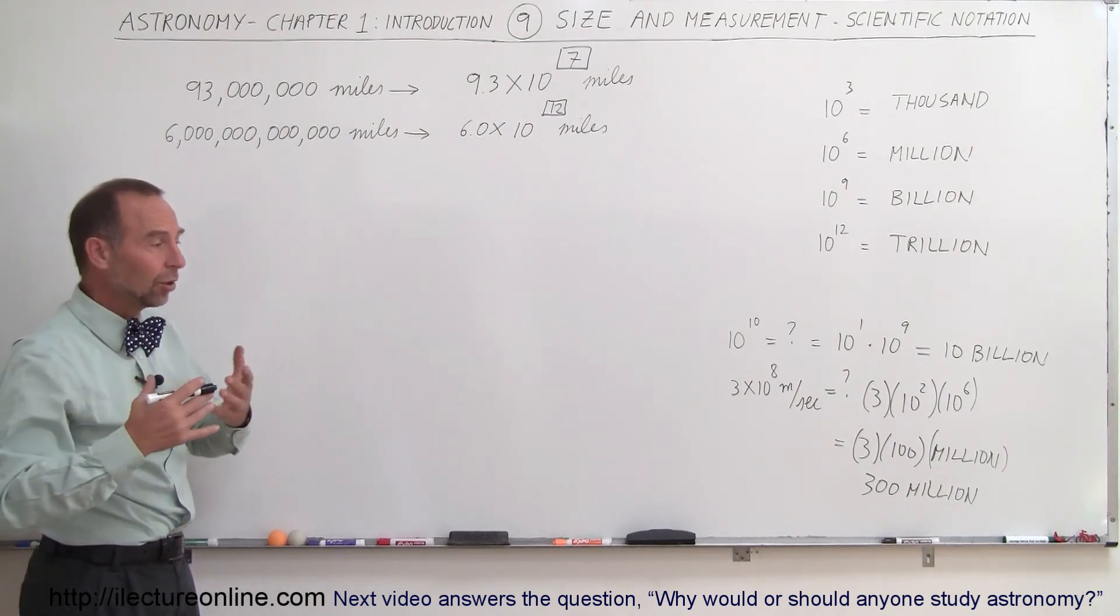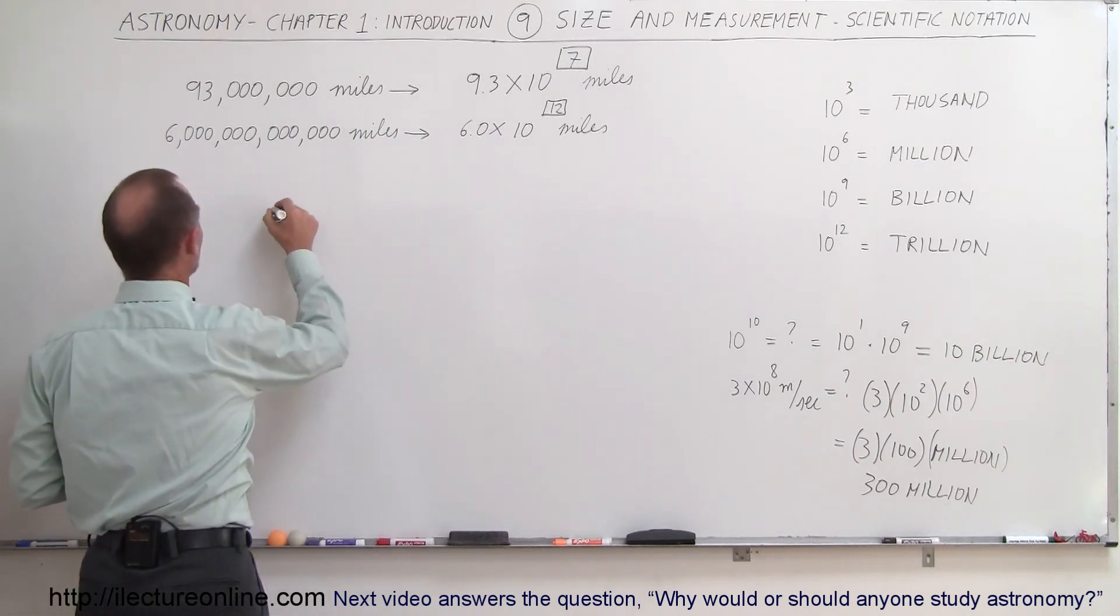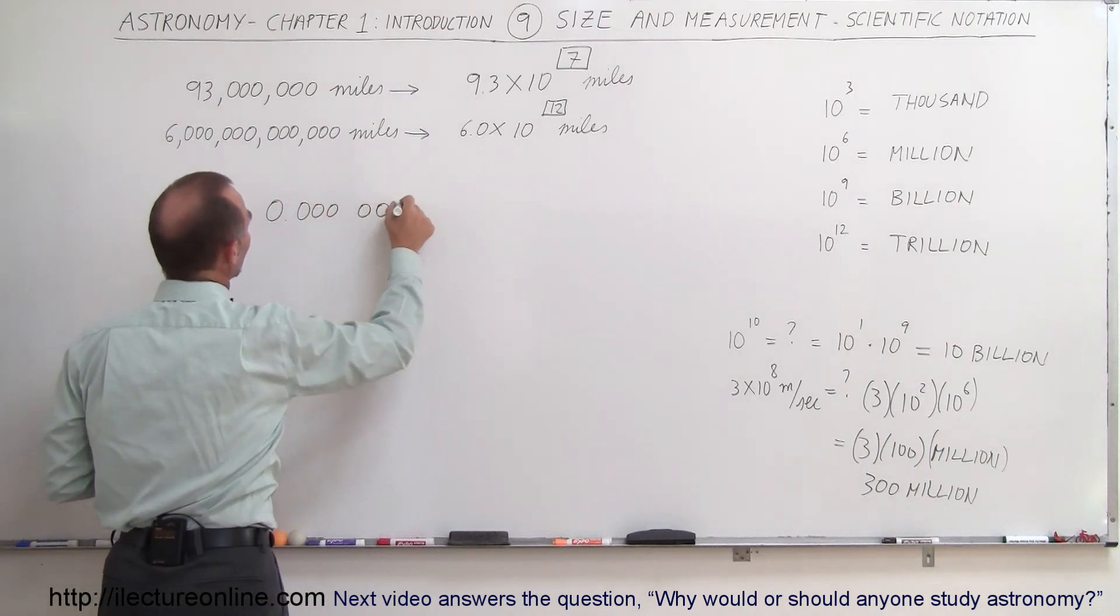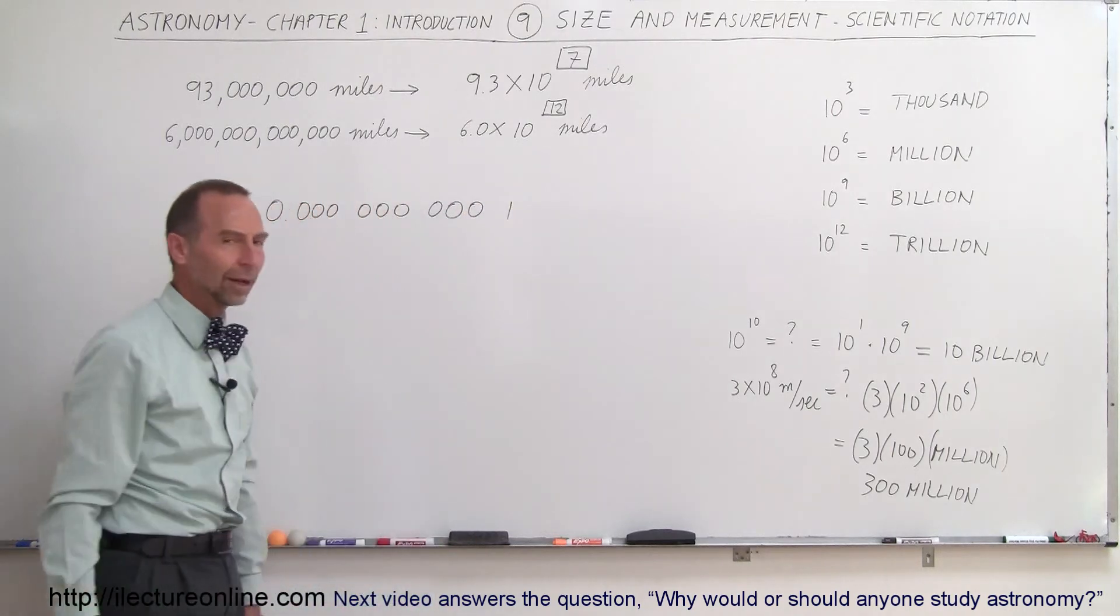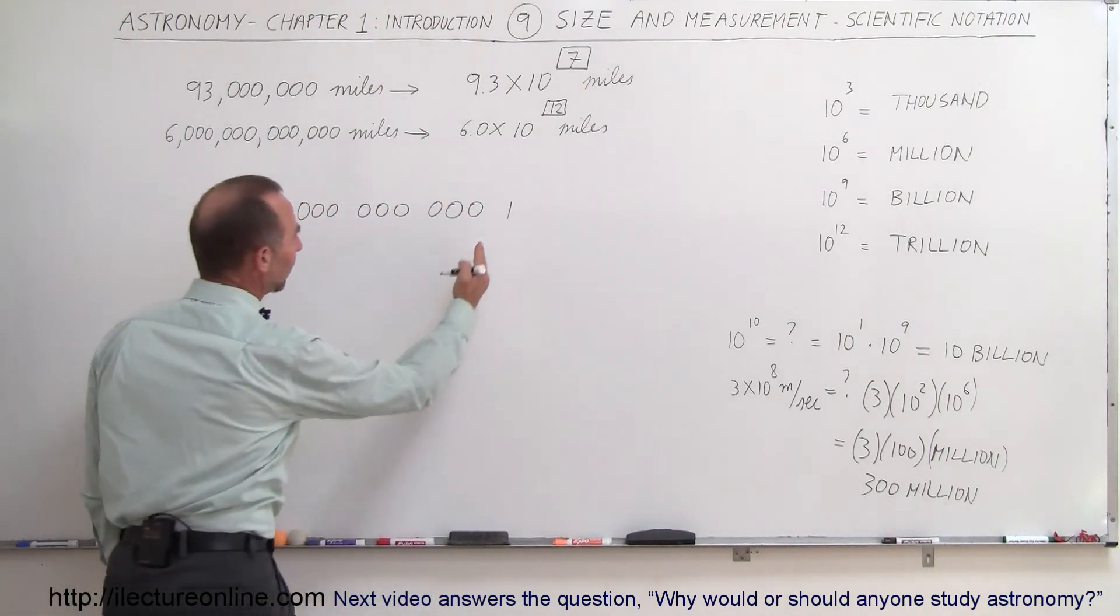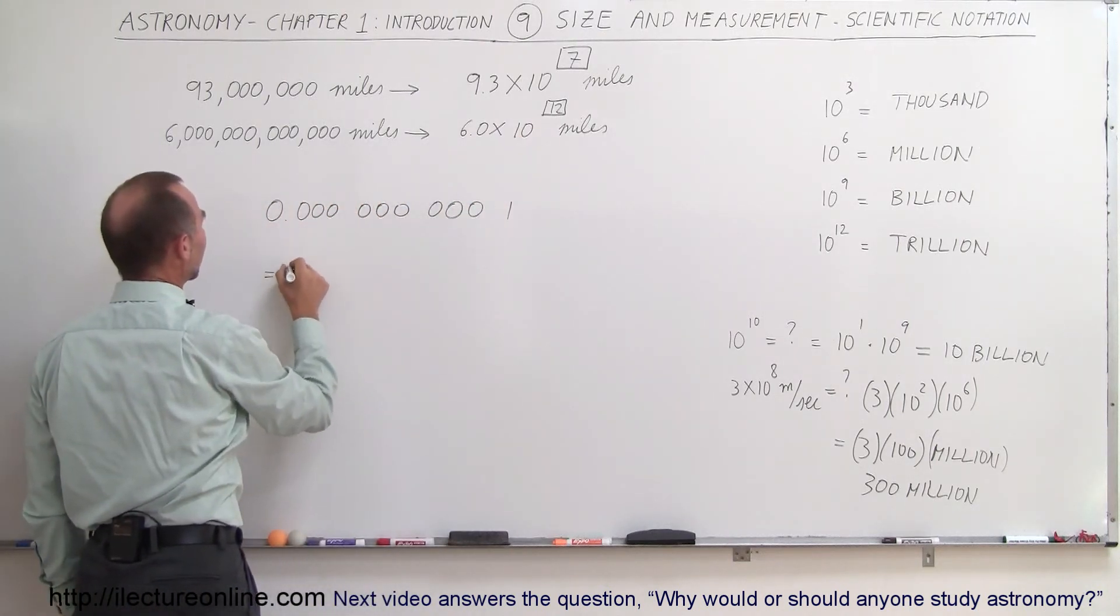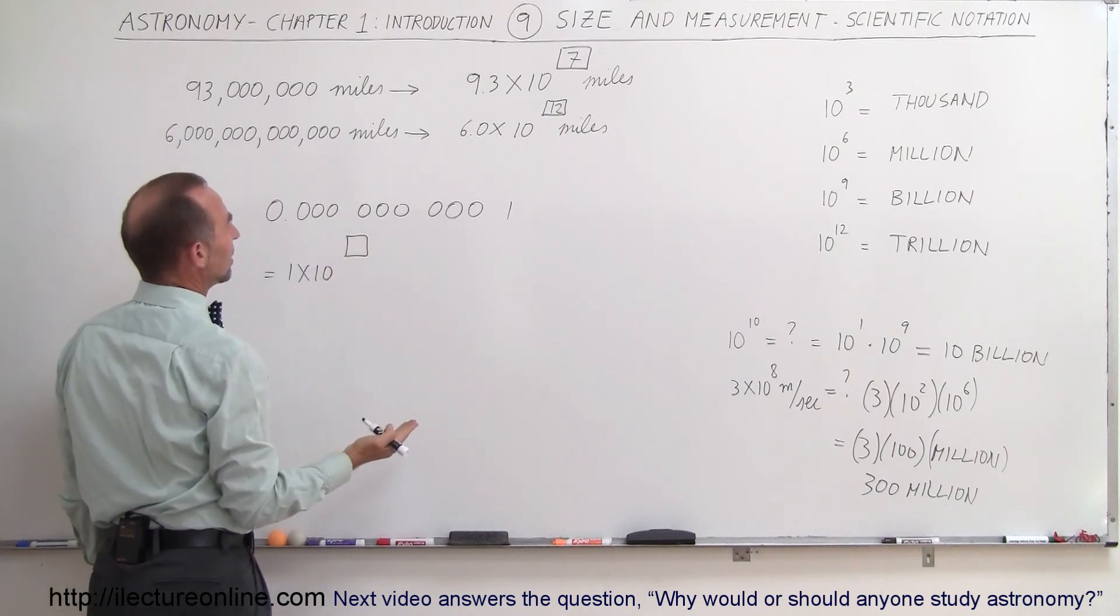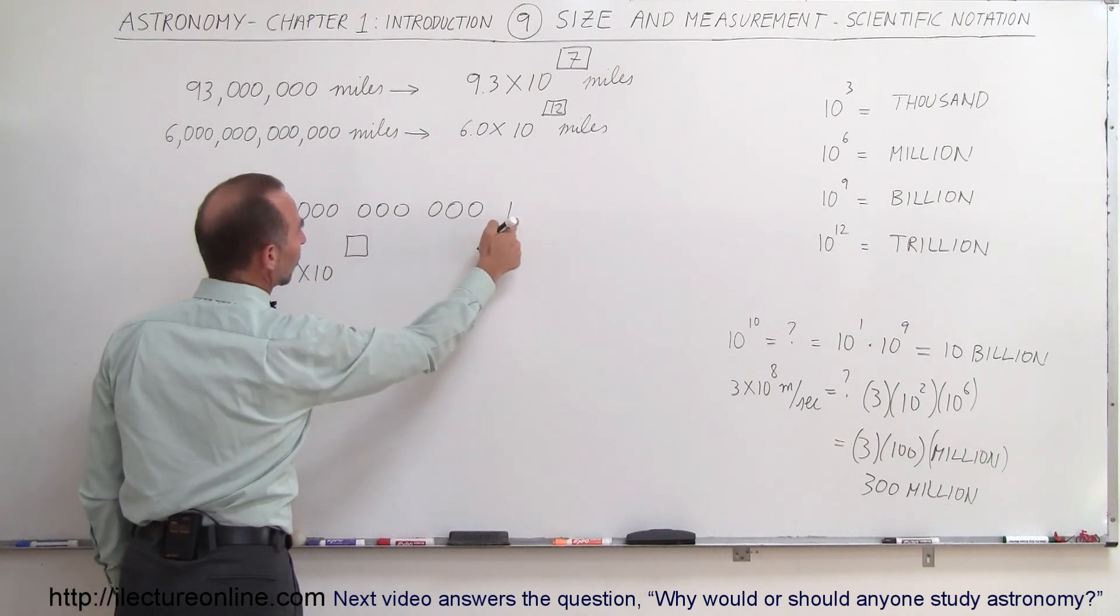Let's say I want to show the diameter of an atom. Well, the diameter of an atom is approximately 0.00000001. Well, how do you write that in scientific notation? Well, now we're talking about a very small number, which means we're going to need a negative exponent. So we could write this as 1 times 10 to the, and of course, we need to know how many decimal places.